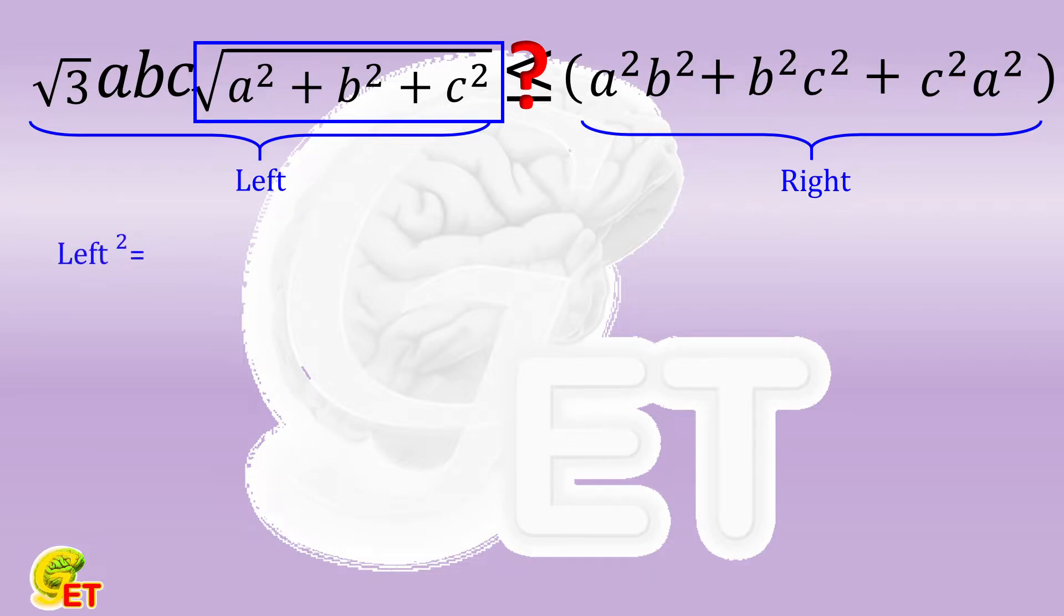The square of the left is equal to 3 times the product of the squares of the three edges times their summation. Then we remove the parenthesis.